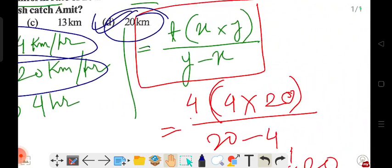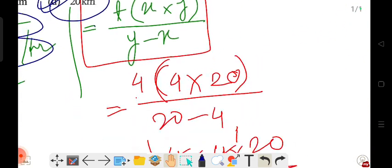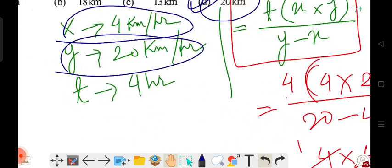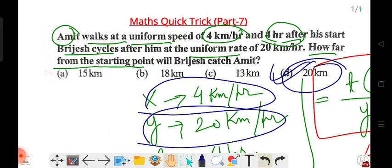If you use the traditional way, it will be very complicated. You'd need to set up equations with speed, distance, equation 1, equation 2, and it takes a lot of time. So if you save time in reasoning and math sections, you can use it for English.